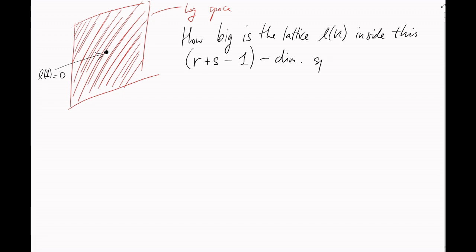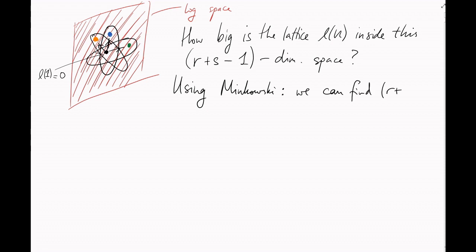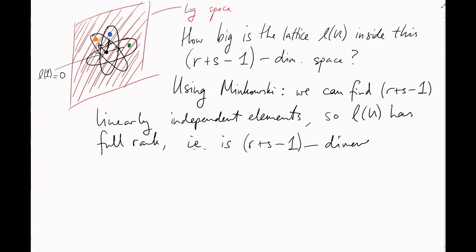And how big is the lattice? Well, using Minkowski's theorem for some well-chosen bubbles will allow us to find R plus S minus 1 linearly independent elements inside this space. So the lattice must have dimension R plus S minus 1.